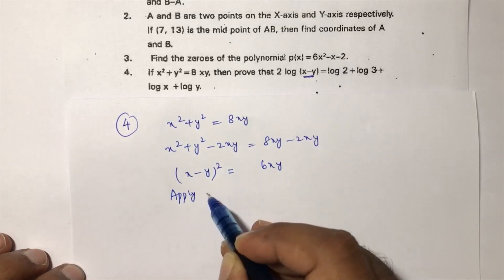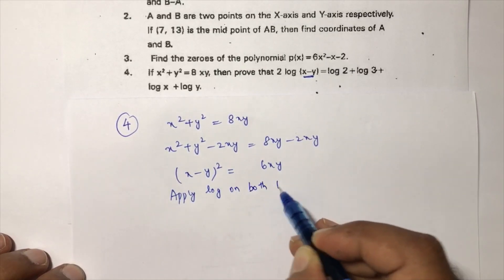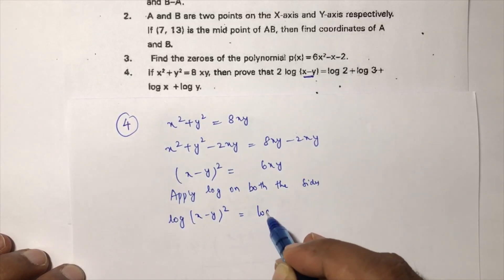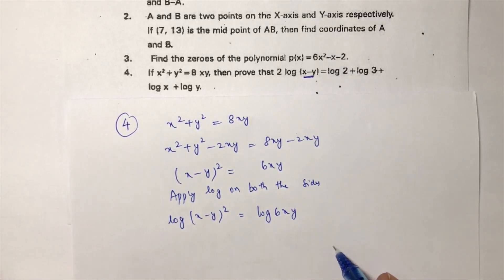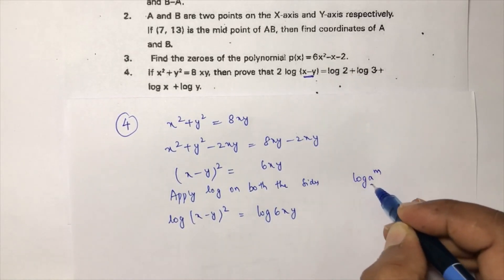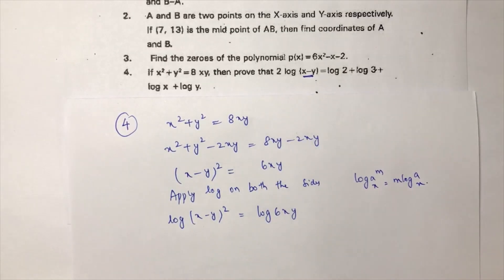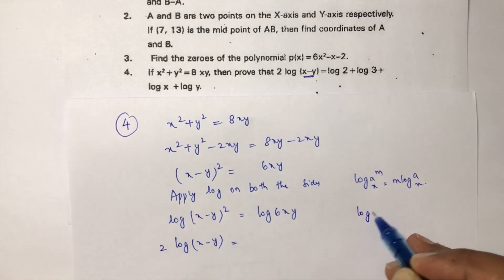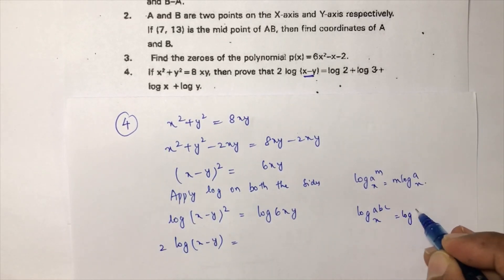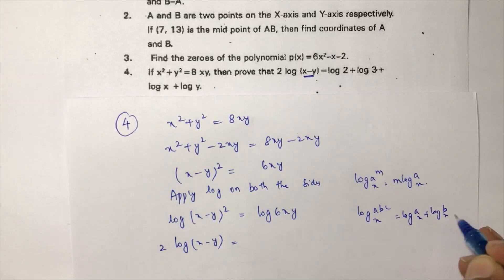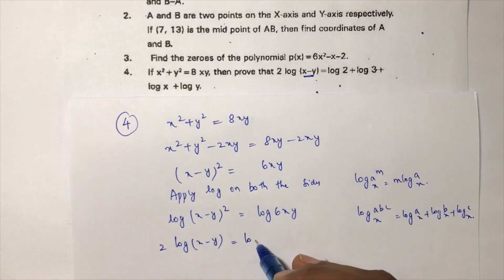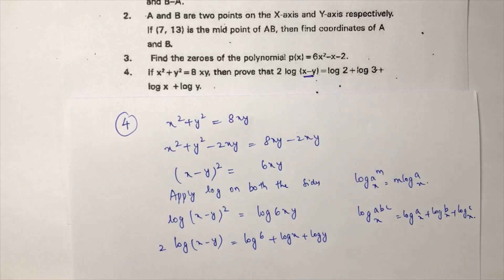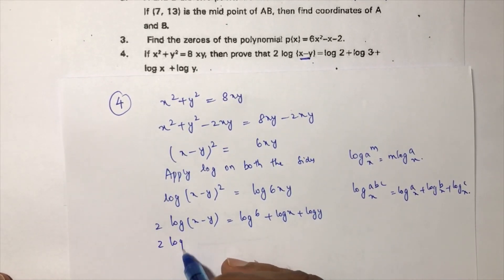Now apply log on both sides: log(x − y)² = log(6xy). Using the power rule, log aᵐ = m·log a, the left side becomes 2·log(x − y). Using the product rule, log(abc) = log a + log b + log c, the right side becomes log 6 + log x + log y.